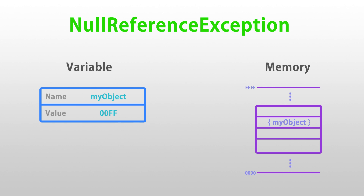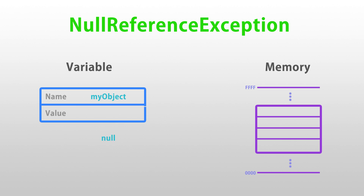Think of it as a pointer to a location in memory where the actual object is. If you have the reference correctly set, then you grab that memory location and go into the memory in order to find the actual object. However, if the reference has no value, meaning that it's set to null, then the code does not know where else to go - that's when you get the error. The name null reference exception: it's an exception, meaning an error, due to trying to access a reference that is currently set to null.